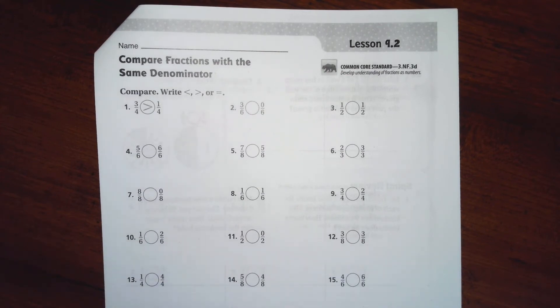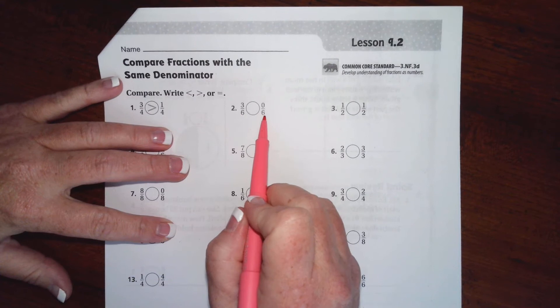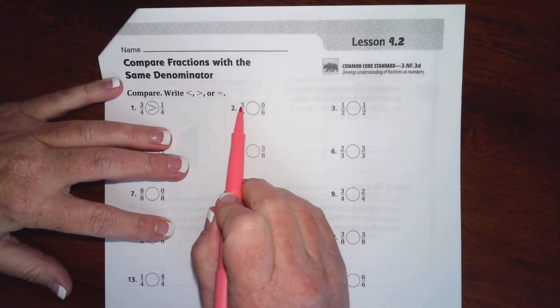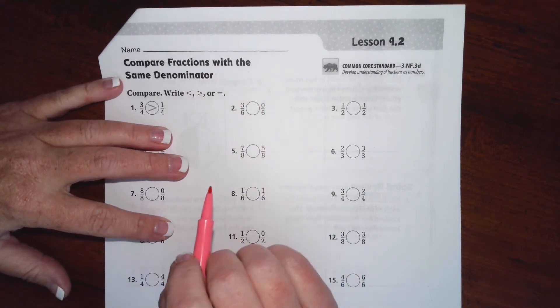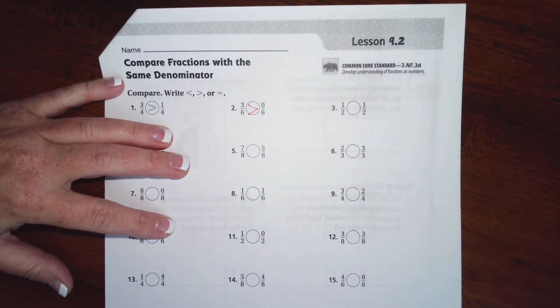We're going to do is see the one that has the bigger top number, and that's going to be our bigger number. Okay, so we both have a six on the bottom, so we're just going to look at the top. Three and zero. Well, three is the bigger one, and the alligator opens to the bigger number.